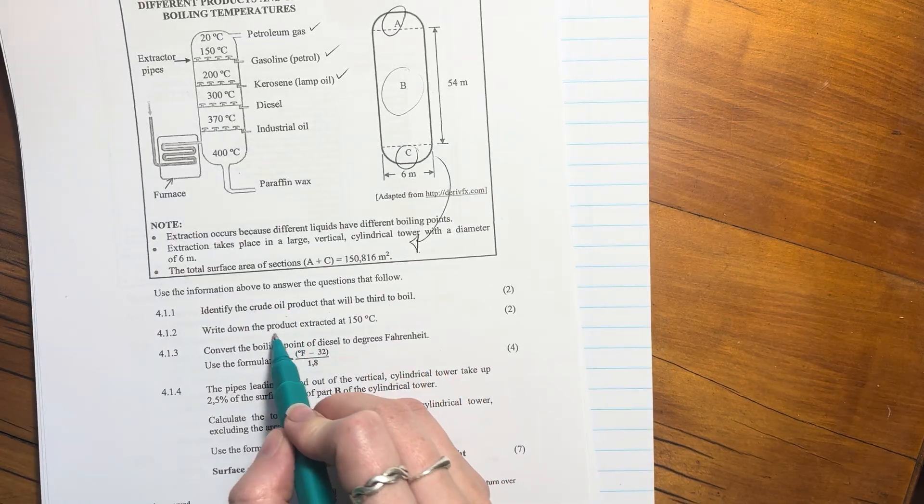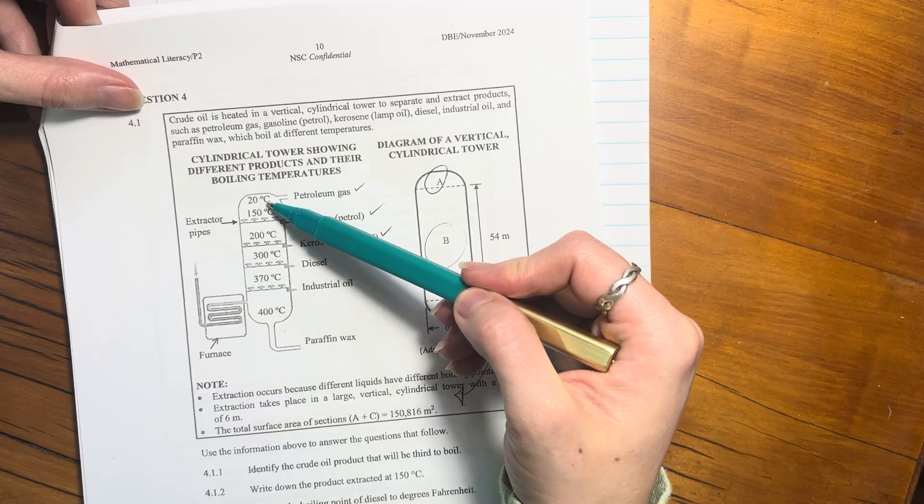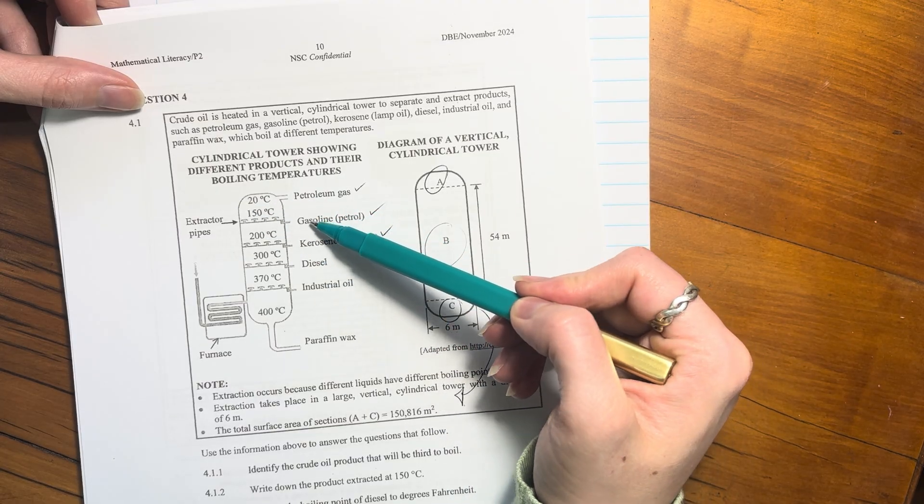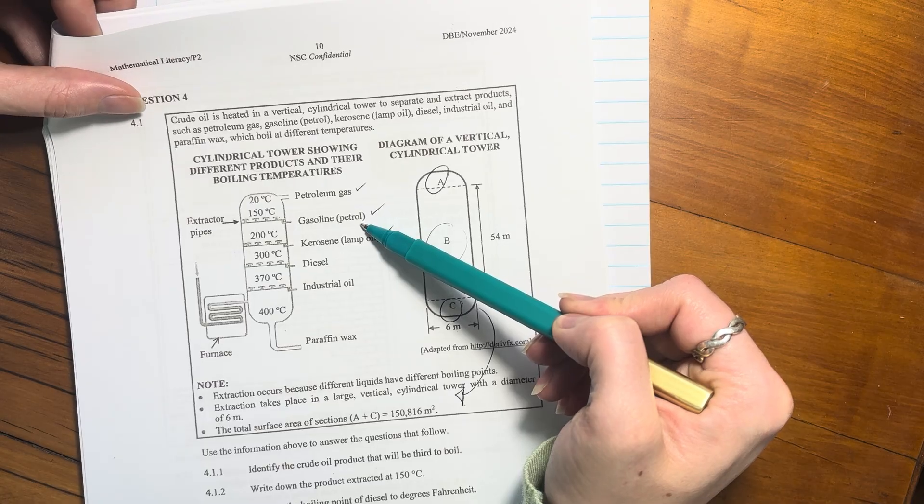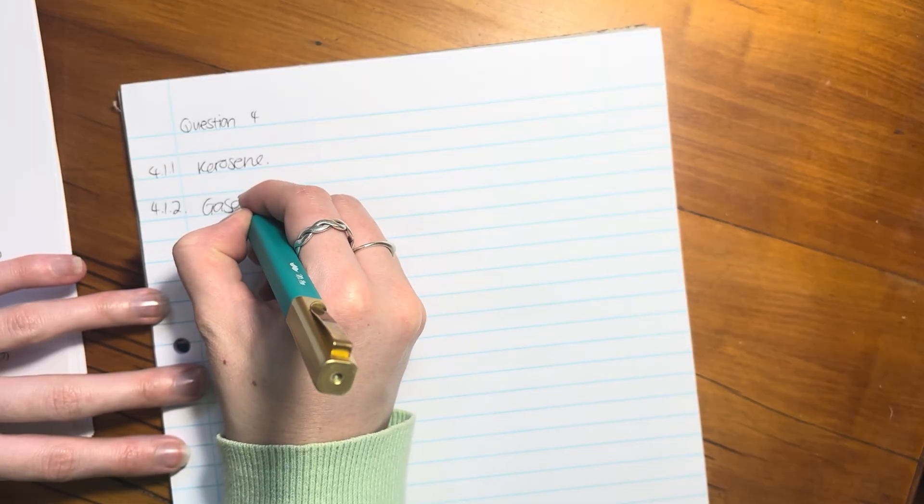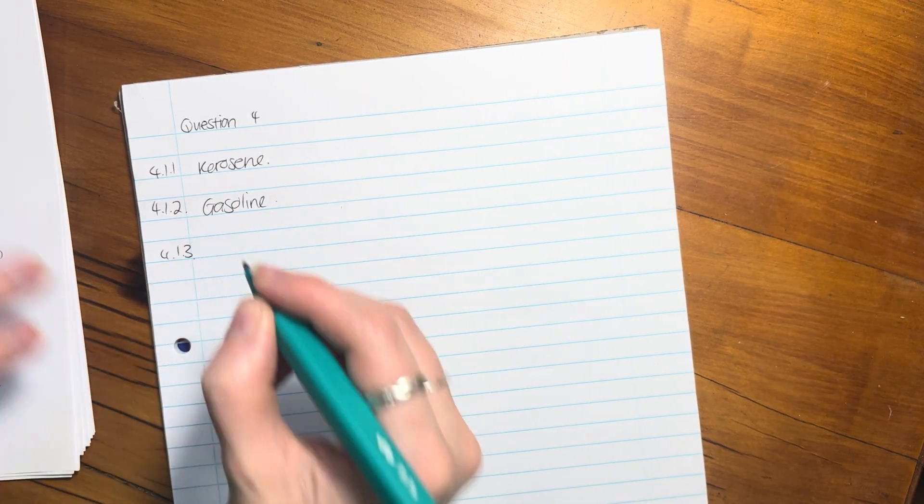Write down the product extracted at 150 degrees Celsius. So 20 degrees Celsius is petroleum, then 150 degrees Celsius is gasoline. So that will be gasoline or petrol. You can write either. I'm just going to write gasoline. That's what they call it in America, that's why they call it gas.